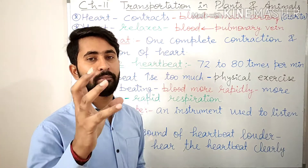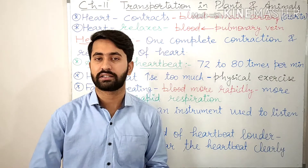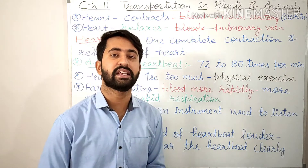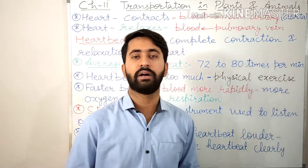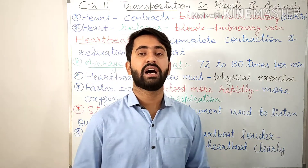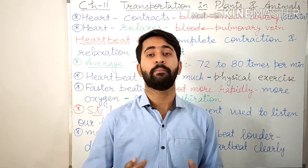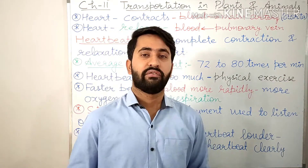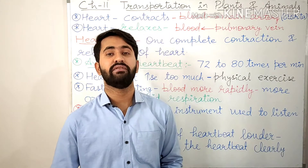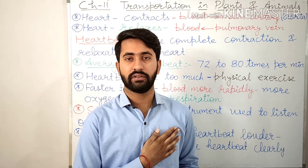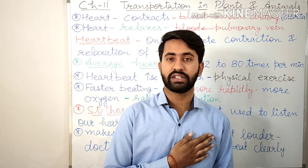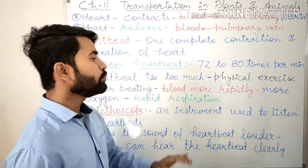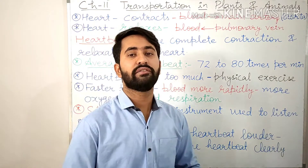Heartbeat means one complete contraction and relaxation of the heart. The average heartbeat of an adult person while resting is approximately 72 to 80 times per minute. This means that the heart pumps the blood into the main artery approximately 72 to 80 times in a minute. We can feel our heartbeat if we keep our hand on the left side of our chest. Then we can feel the contraction and relaxation of the heart. The number of heartbeats increases during and after a physical exercise.